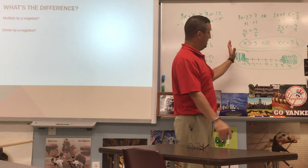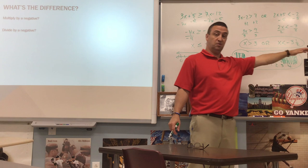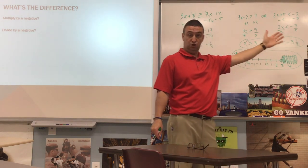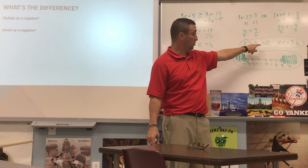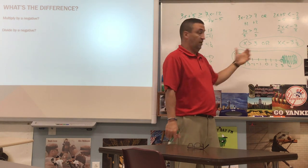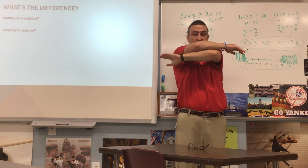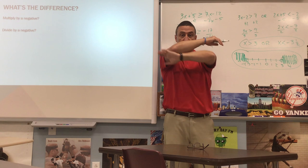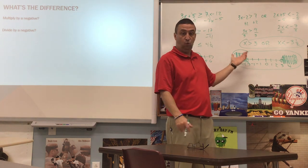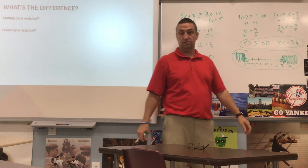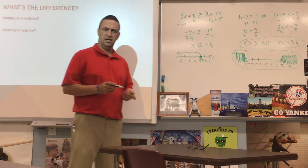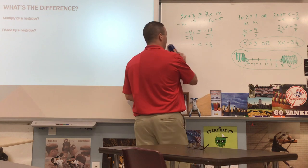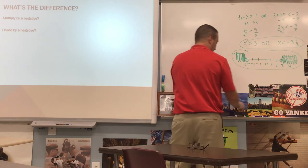Watch out for special cases. Like if both inequalities point in the same direction, you shade differently — you still want where at least one is true and watch where they overlap. If they fully overlap like both pointing toward each other covering everything, then the whole thing is true because every number is either smaller than 3 or bigger than negative 3 and a half. So you do have special cases to watch out for. Now what about the other compound inequality — the 'and'?